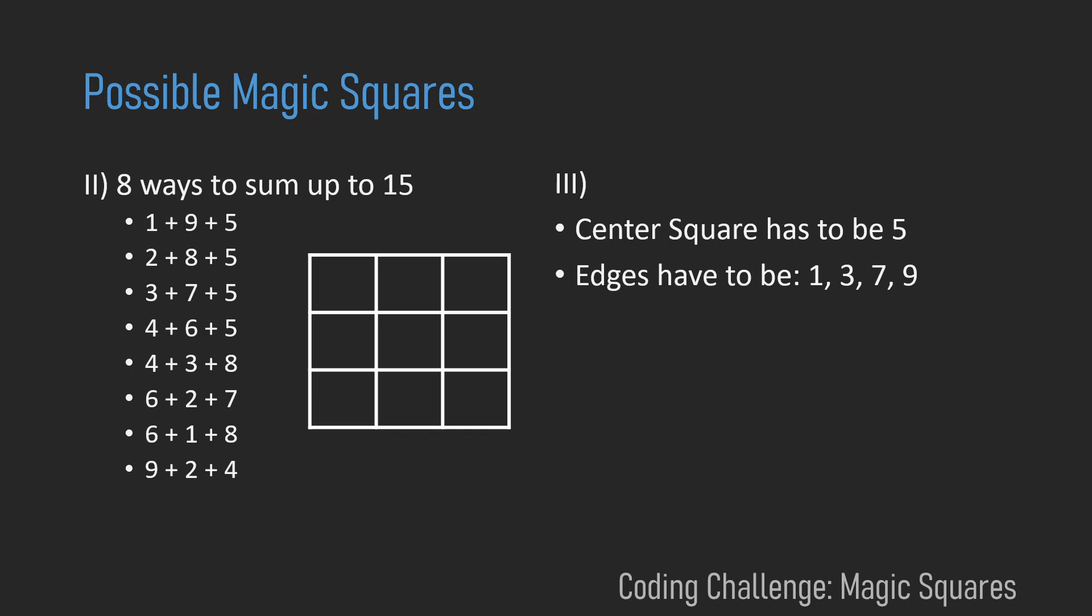And the last discovery just tells us what the numbers for the corners will be. So now when we look at the 2, for example, the 2 appears three times. And when we look into the magic square, we see that a corner is part of three sums. So this leads to the fact that all corners have to be 2, 4, 6, and 8. And now we have all conditions together to form a magic square.